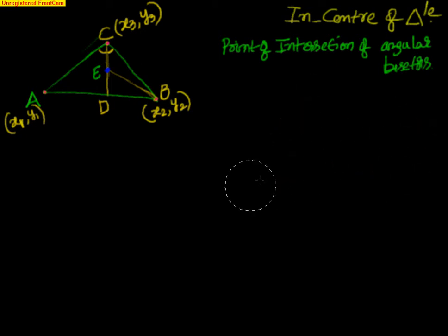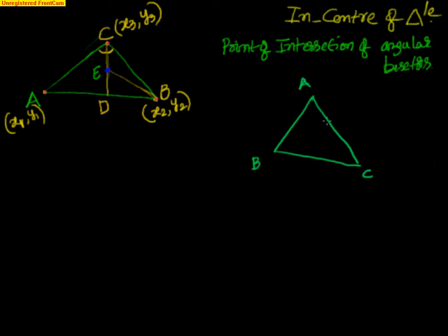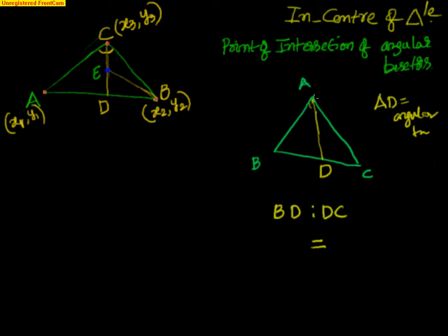Now let us see what the angular bisector theorem says. Let me take a simple triangle ABC. From A you are drawing an angular bisector — that means you are dividing angle A into two parts, and it meets the opposite side BC at D. So AD is the angular bisector. We are interested in finding out what BD is to DC. The theorem says BD is to DC is in the ratio of AB is to AC.